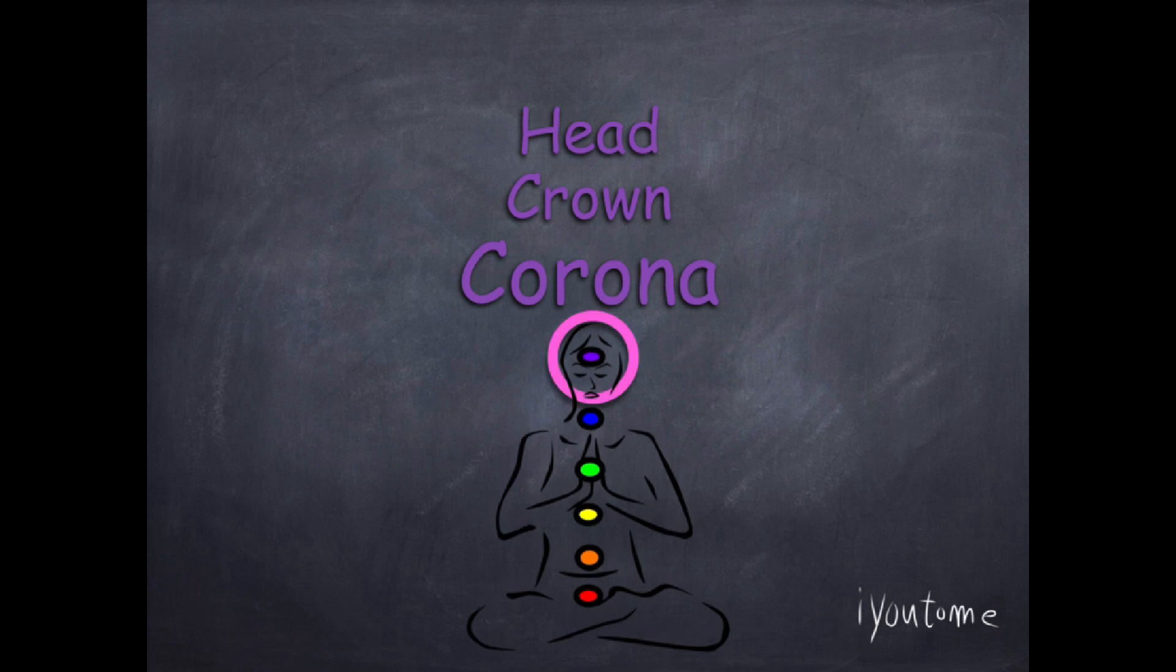The etymology of corona. Corona means crown. It means head. This is your top energy center. You do know that your brain is the most energetic, right?